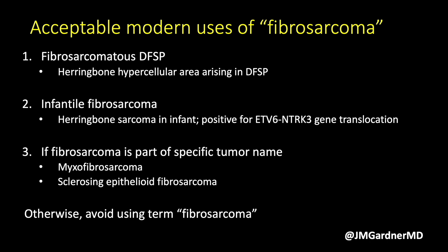The times it is acceptable to call something fibrosarcoma in modern soft tissue pathology: fibrosarcomatous DFSP, as we just saw — some people use the term fibrosarcoma arising in DFSP; and infantile fibrosarcoma, which is a herringbone-pattern, cellular sarcoma in infants defined by a gene fusion of ETV6::NTRK3. It is a molecularly-defined tumor with a very good prognosis, so it is important to diagnose it correctly.